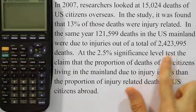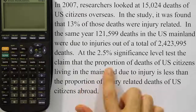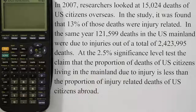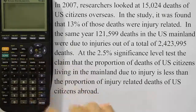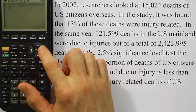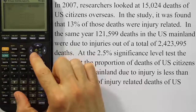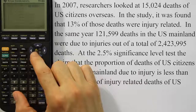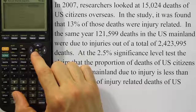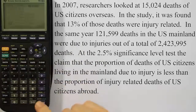It's definitely a hypothesis test about two proportions, so let's go ahead and run the test. We're going to press the STAT key on our calculator and arrow over to TESTS, then go down to the two-proportion z-test. That's option six on my calculator, so I'll hit enter.